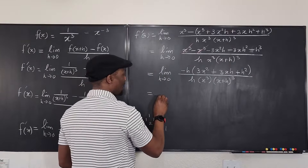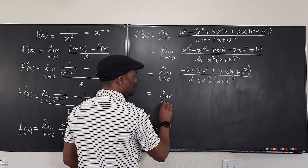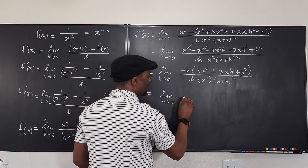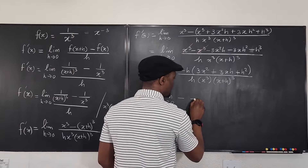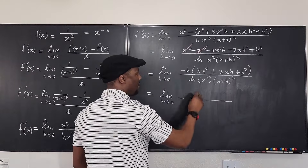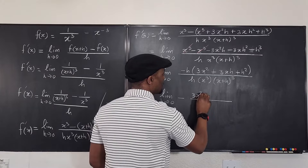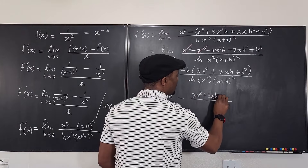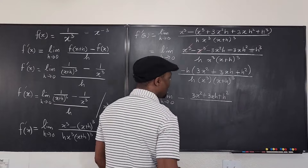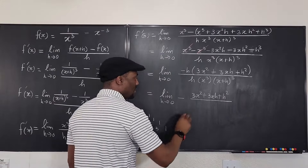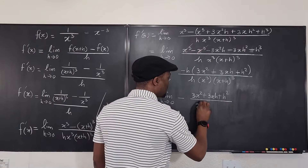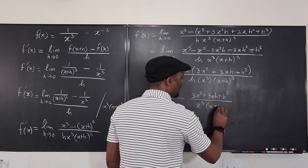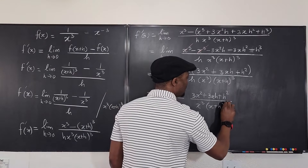The h in the numerator cancels the h in the denominator. We're left with the limit as h goes to 0 of: negative (3x² + 3xh + h²) divided by x³·(x+h)³. The negative sign remains out front.